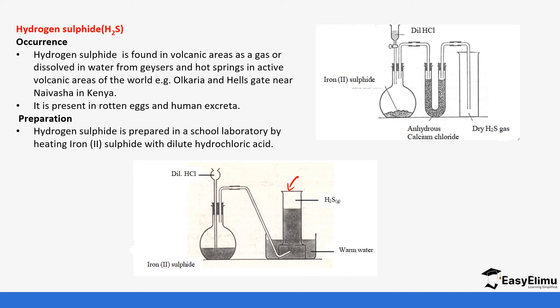If you want to collect the gas dry, instead of collecting it over warm water, we'll dry it using anhydrous calcium chloride in the U-tube. You can see it's being collected by downward delivery, which tells you there is also a property that makes it to be collected in this manner.